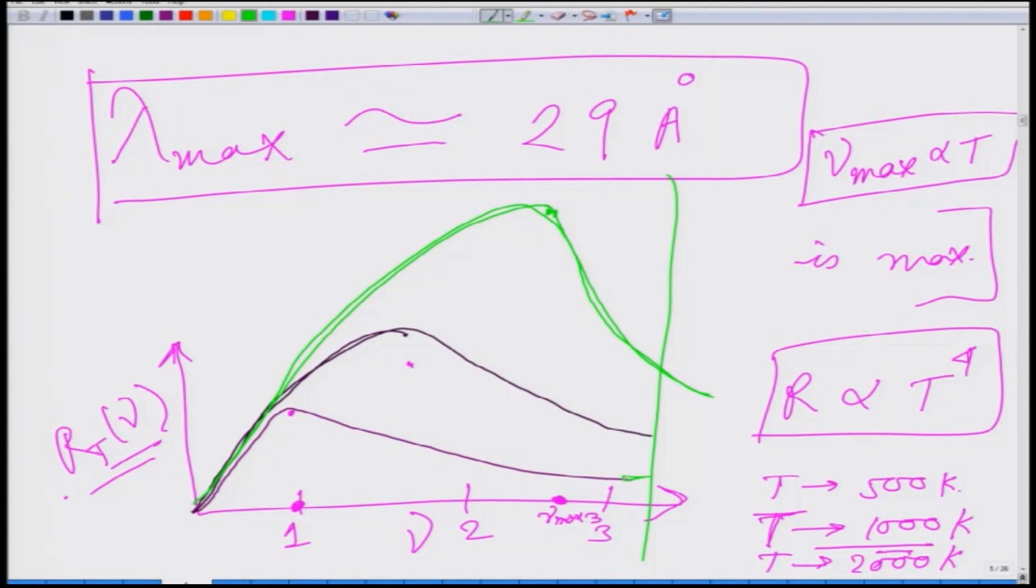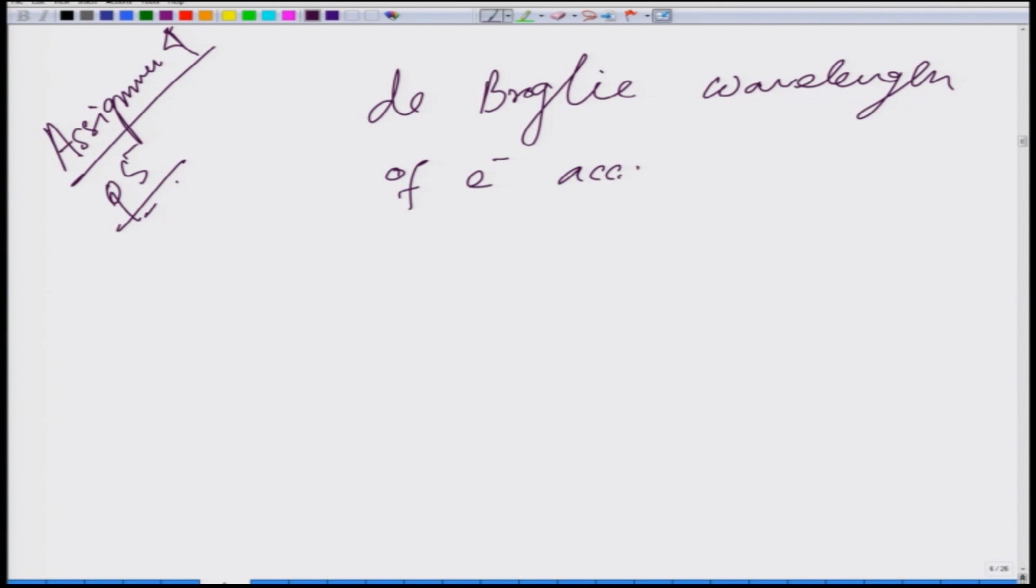That solves the first problem and let us move on to the second problem which is assignment number 4 question number 2. In assignment number 4 question number 5 we need to find out the de Broglie wavelength of electron that is accelerated by a potential difference or a voltage v equal to 10 to the power 4 volt.